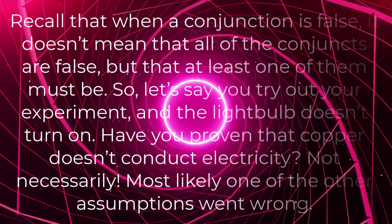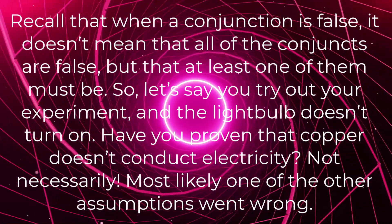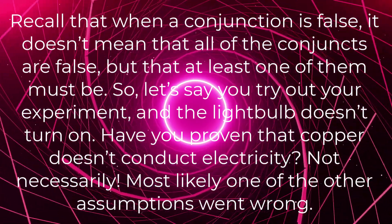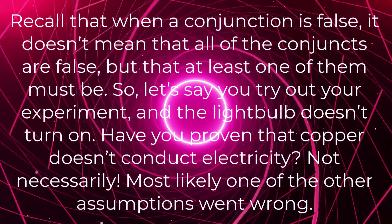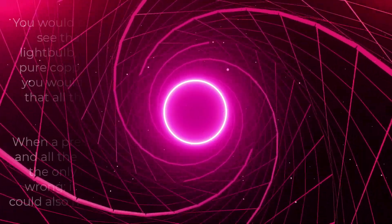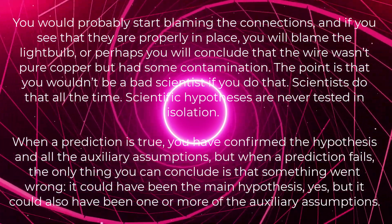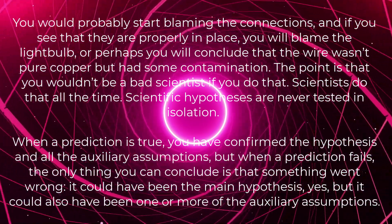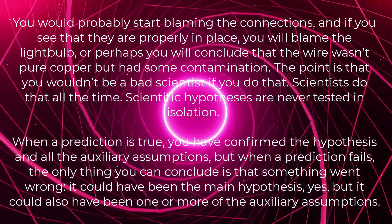Recall that when a conjunction is false, it doesn't mean that all of the conjuncts are false, but that at least one of them must be. So let's say you try out your experiment and the lightbulb doesn't turn on. Have you proven that copper doesn't conduct electricity? Not necessarily. Most likely, one of the other assumptions went wrong. You would probably start blaming the connections, and if they are properly in place, you will blame the lightbulb, or perhaps conclude that the wire wasn't pure copper but had some contamination.